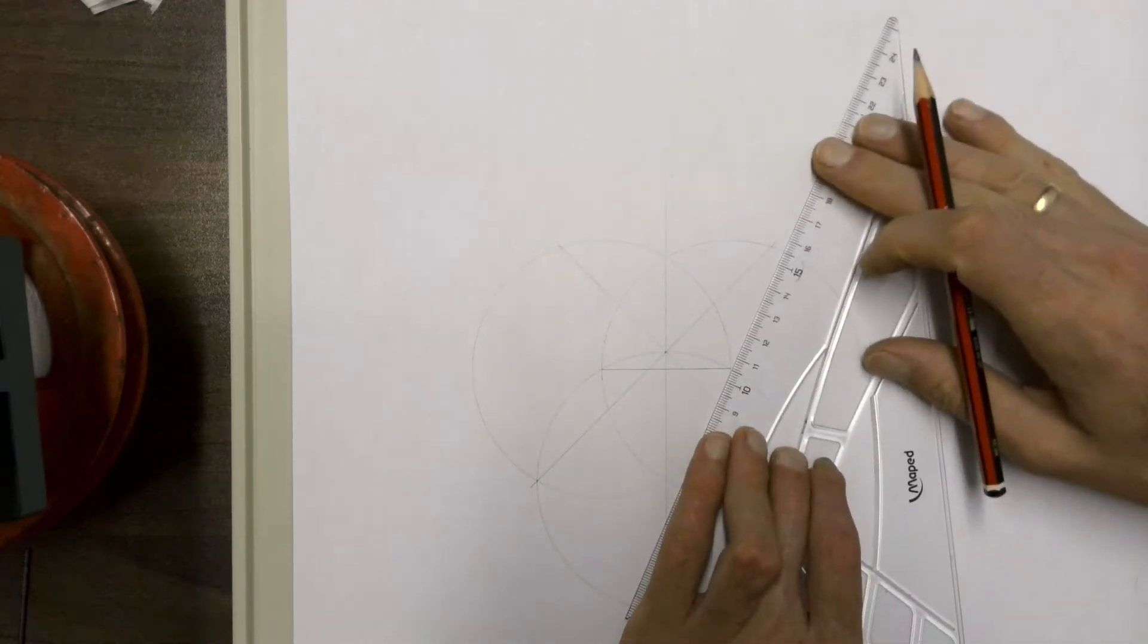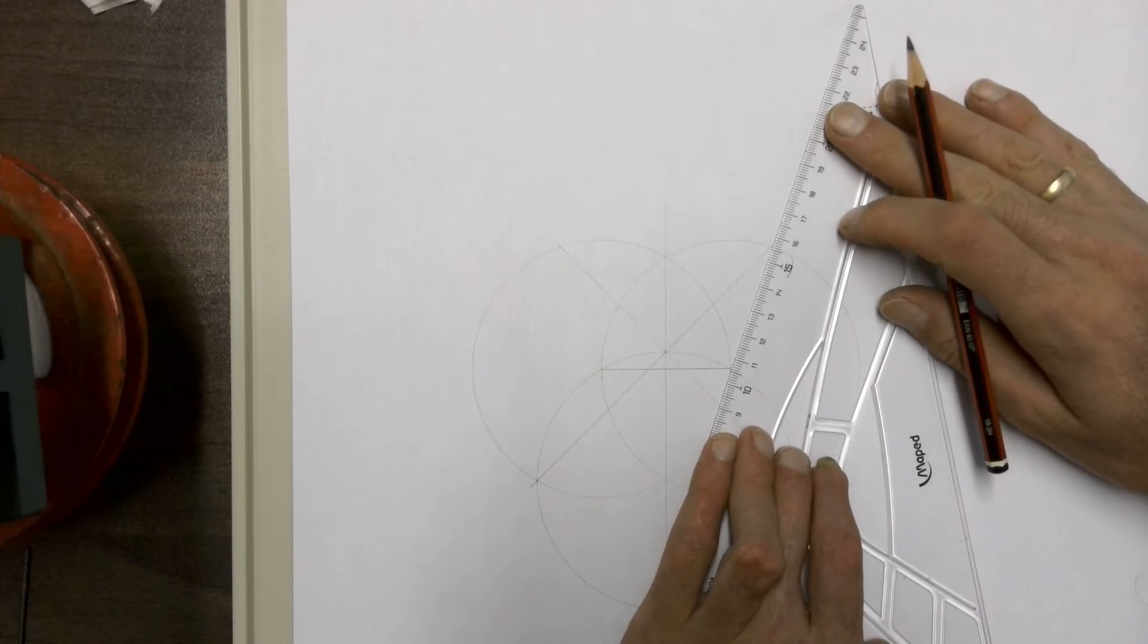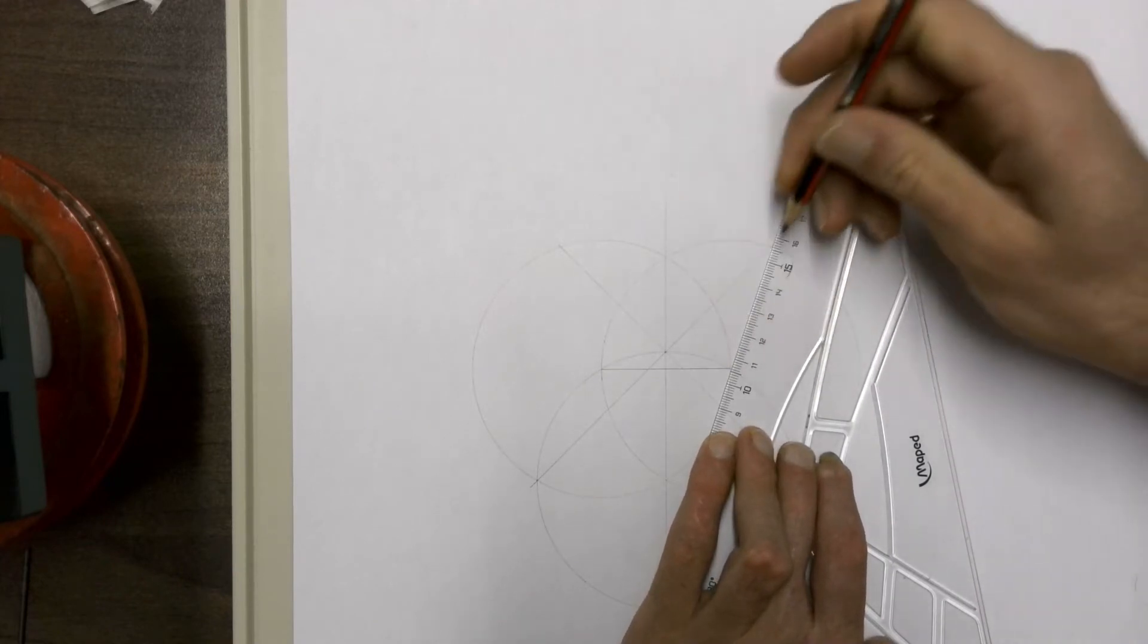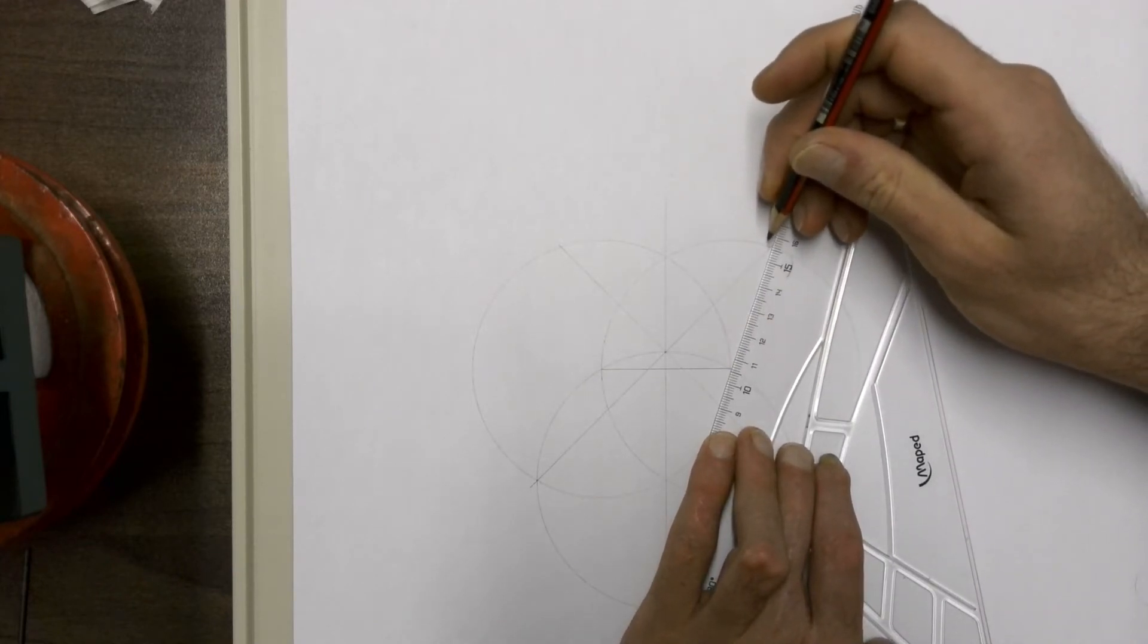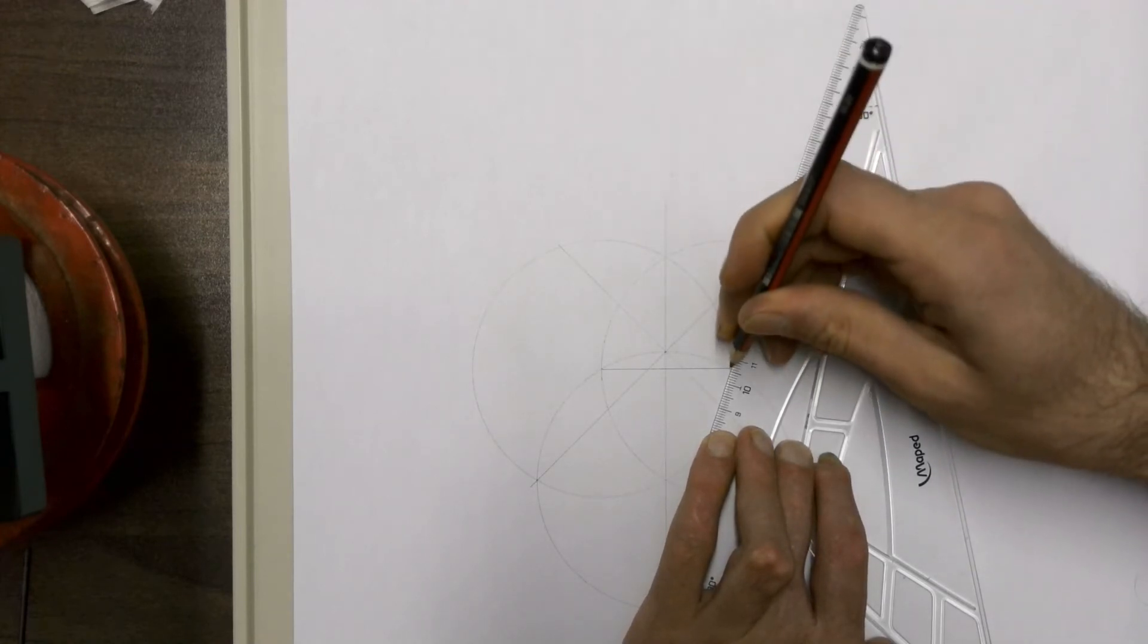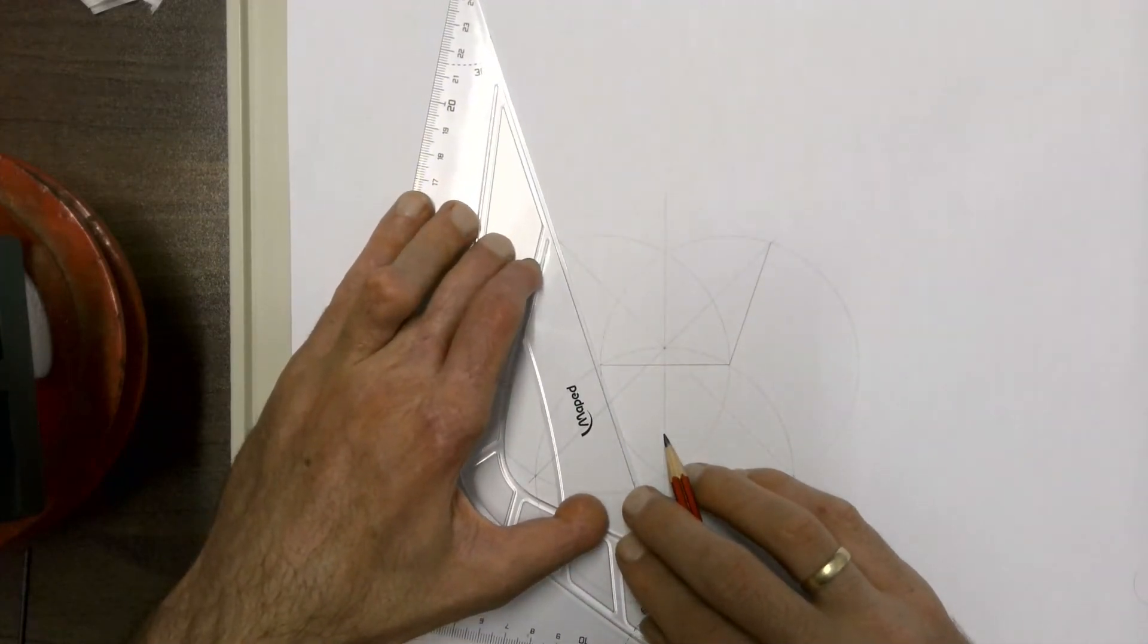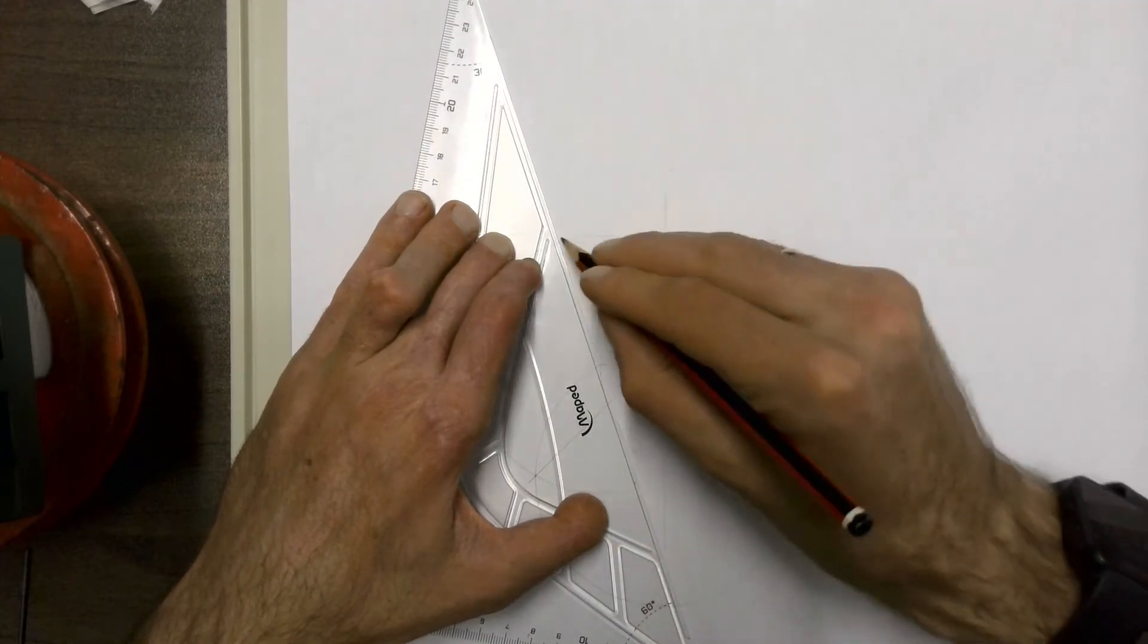Once you've done that, take the corner of your baseline and join it to the point where that line you've drawn intersected with the circle on the right. Do the same thing on the left, joining that corner of your baseline to where that line intersected the circle.